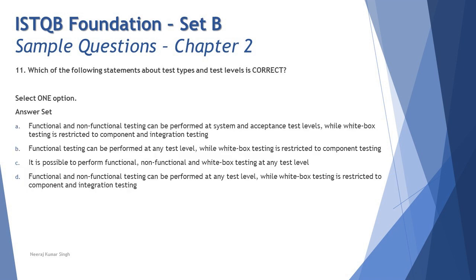Question number 11: which of the following statements about test types and test levels is correct? This question covers a combination of topics from sections 2.2 and 2.3 of chapter 2. Option A says: functional and non-functional testing can be performed at system and acceptance test levels, while white box testing is restricted to component and integration testing. There are no hard and fast rules that white box testing is limited to component and integration — any approach, white box or black box, can be applied to any test level. So option A is not correct.